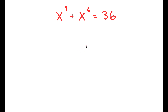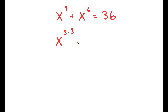So in this problem, I have x to the power of 9 plus x to the power of 6 is equal to 36. To solve this, I'm going to first start by rewriting this as x to the power of 3 times 3, plus x to the power of 3 times 2, is equal to 36.